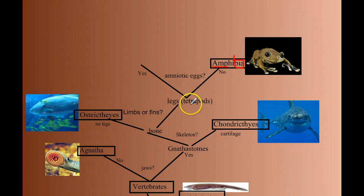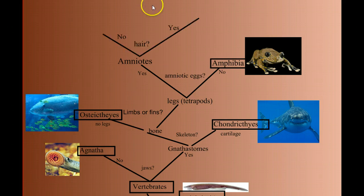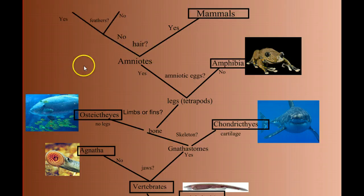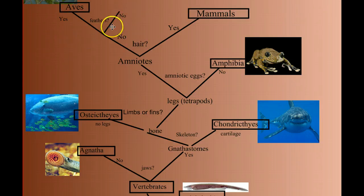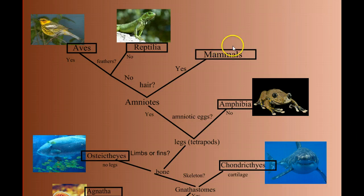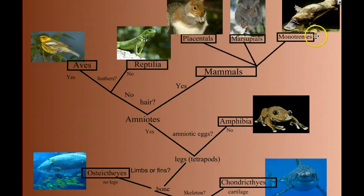If we go down the branch of animals with an amniotic egg, we have the amniotes. Amniotes by definition are terrestrial animals, because they can lay their eggs on land. The first question we ask with the amniotes is: do they have hair or not? If yes, then we have the mammals. If no, we ask another question: do they have feathers? If yes, we have the birds. If no, we have the reptiles. Going one step further with the mammals, we divide class Mammalia into three subclasses: the monotremes or egg-laying mammals, the marsupials, and the placentals, which of course we belong to.